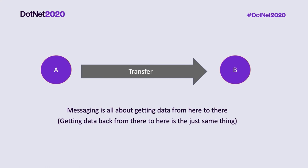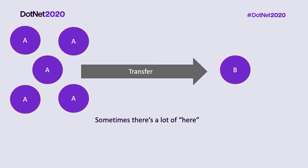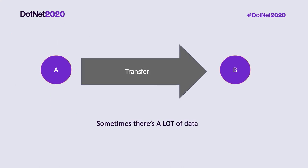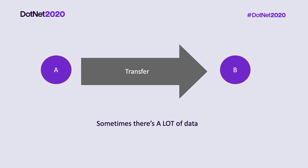Messaging is really all about getting information from one part to another — a client sending to a server, or a server to another server. Sometimes it's one sender and one receiver. Sometimes it's many senders but only one place receiving. Sometimes you have a lot of information to send over the wire and you need an intelligent way to ensure it all gets there. And sometimes you need one message to go out to many different recipients.